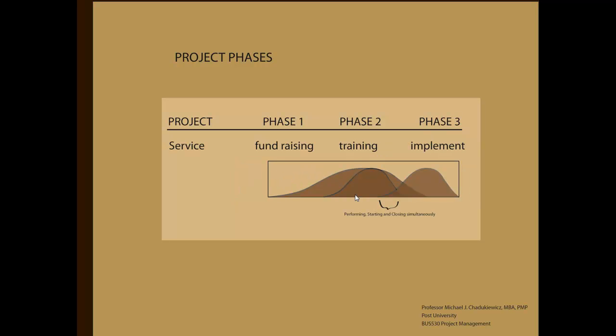Project phases can also overlap. In our after-school program example, all the phases overlap. Notice each phase of the project goes through a complete life cycle. Also note, at several points in the overall project, three different stages of the life cycle are occurring simultaneously.